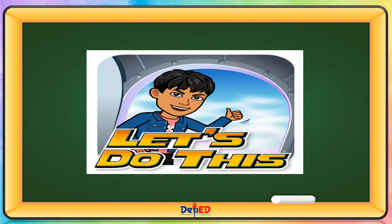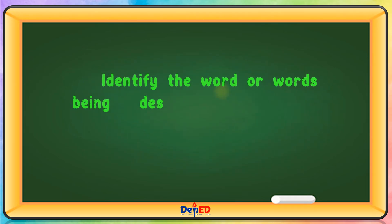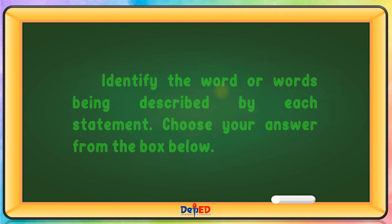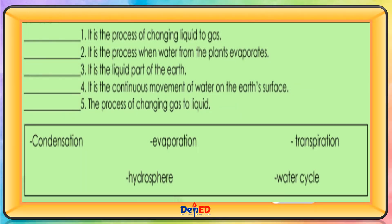Activity: Identify the word or words being described by each statement, choosing your answer from the box. The process of changing liquid to gas is evaporation. The process when water from plants evaporates is transpiration. The liquid part of the earth is the hydrosphere. The continuous movement of water on the earth's surface is the water cycle. The process of changing gas to liquid is condensation.